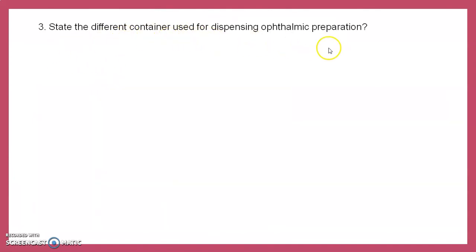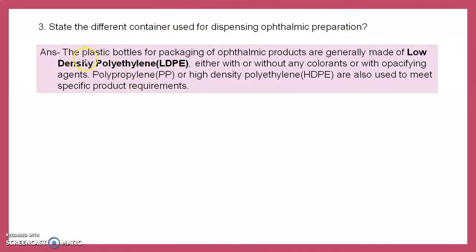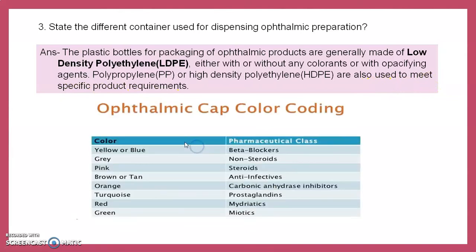What are the different containers used for dispensing ophthalmic preparations? Plastic bottles for ophthalmic products are generally made of low-density polyethylene, with or without colorant or opacifying agent. Polypropylene or high-density polyethylene are also used. Color coding for ophthalmic preparations: yellow or blue for beta blockers, gray for non-steroids, pink for steroids, brown or tan for anti-infectives, orange for carbonic anhydrase inhibitors, turquoise for prostaglandins, red for mydriatics, green for miotics.